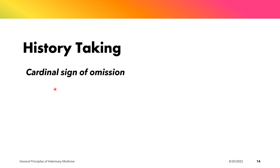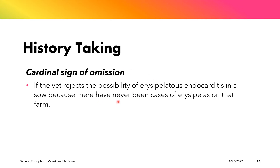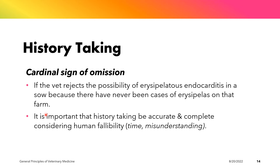One of the important points in history-taking is the cardinal sign of omission. This happens, for example, when the veterinarian rejects the possibility of erysipelatus endocarditis in a sow farm because there have never been cases of erysipelas on that particular farm. Because the veterinarian has never encountered cases of erysipelas in the history-taking process, he or she has not included erysipelatus endocarditis as one of the diagnoses. Hence, it is important that history-taking be accurate and complete, considering human fallibility in time and misunderstanding between the veterinarian as interviewer and the caretaker being interviewed.